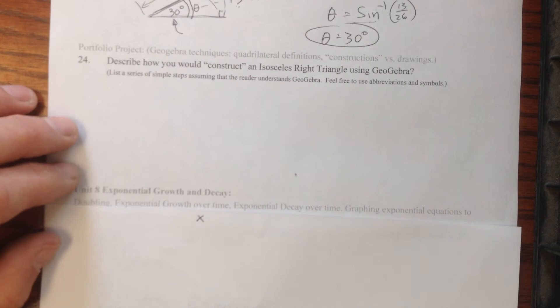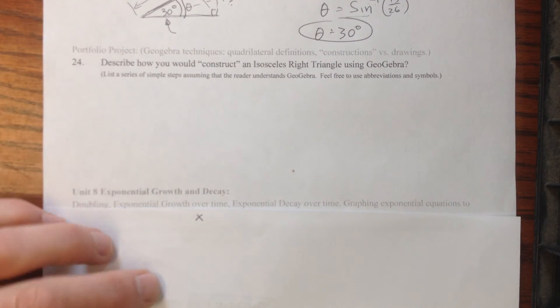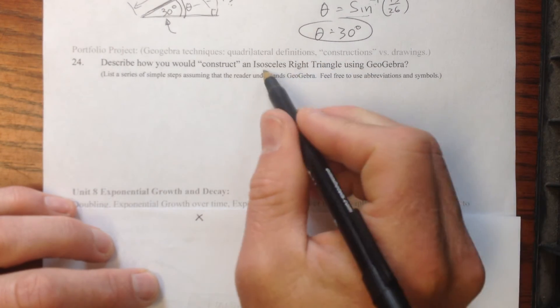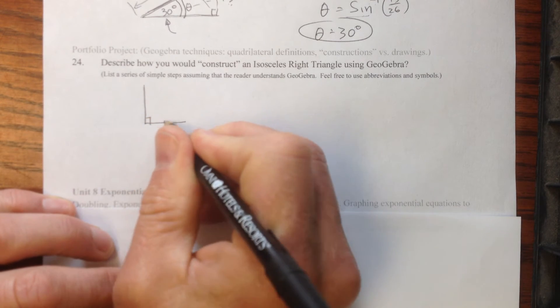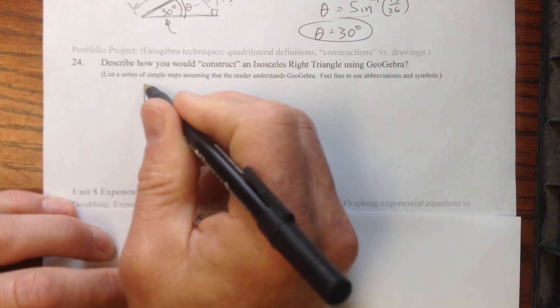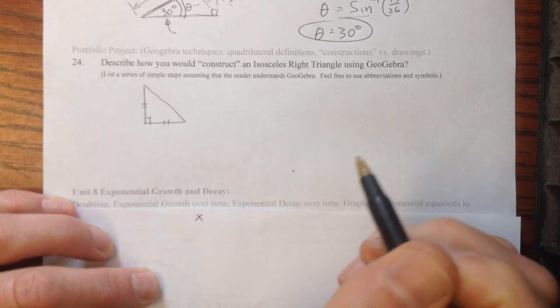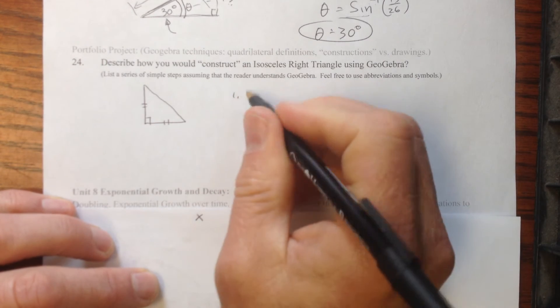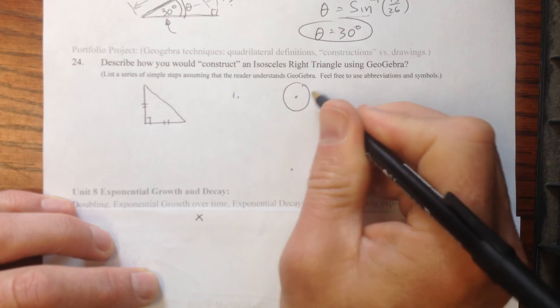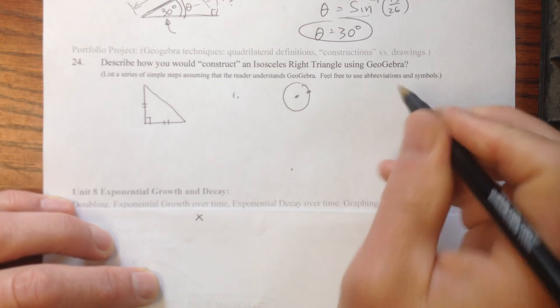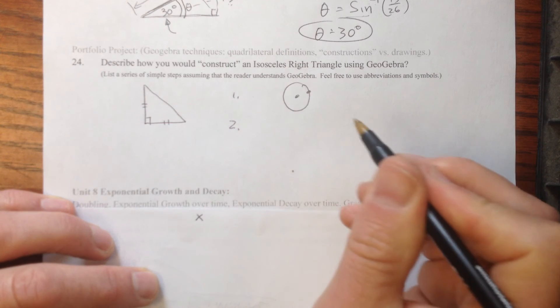Describe how you would construct an isosceles right triangle using GeoGebra. Okay, what's an isosceles right triangle? It's a right triangle that is isosceles. That means that these two sides are the same length, and we have a triangle. So all you really need to do, step one, is I would start by making a circle, with a circle and point.